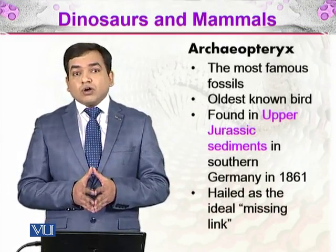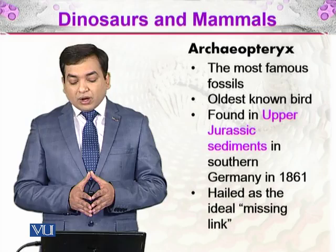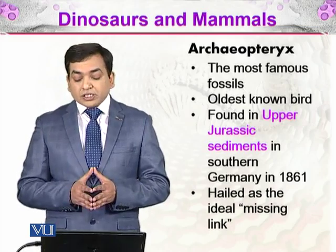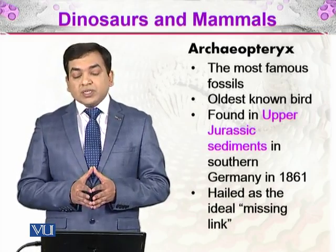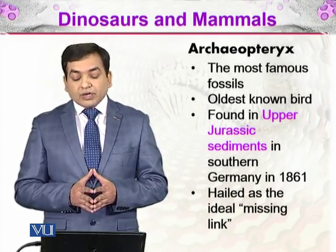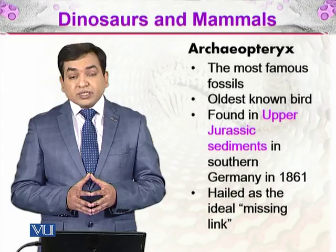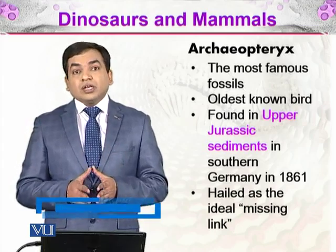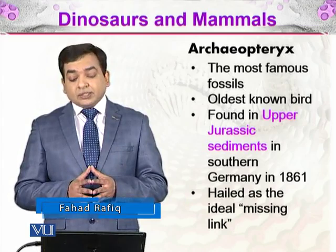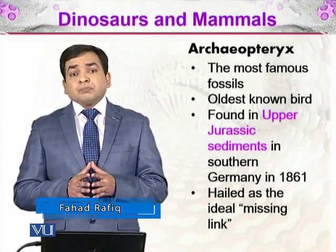There was a fossil of an organism called Archaeopteryx. Archaeopteryx is the most famous fossil. It is the oldest known bird and it was found in Upper Jurassic sediments in Southern Germany in 1861. It was hailed as the ideal missing link.